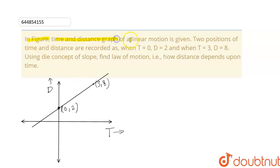Figure, time and distance graph of a linear motion is given. Two positions of time and distance are recorded as: when t = 0, d = 2, and when t = 3, d = 8. Using the concept of slope and the law of motion, that is how distance depends on time...